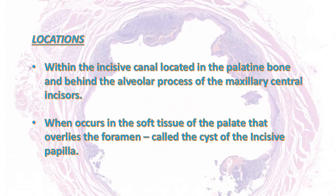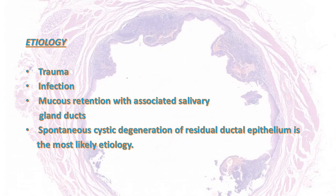The usual locations are in the incisive canal located in the palatal bone, behind the alveolar process of the maxillary central incisors. When it occurs in the soft tissue of the palate overlying the foramen, it has a special name: cyst of the incisive papilla. Etiology could be due to trauma, infection, or mucous retention with associated salivary gland ducts. Spontaneous cystic degeneration of residual ductal epithelium is the most likely etiology.